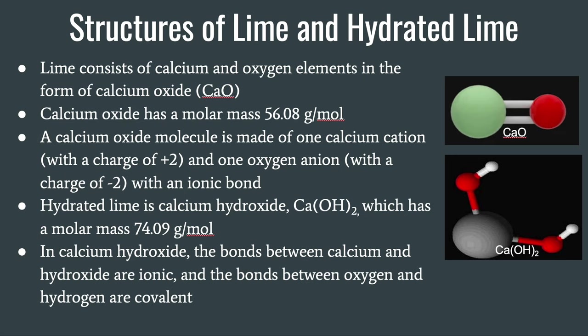So what is the structure of lime and hydrated lime? Lime consists of calcium and oxygen elements in the form of calcium oxide. Calcium oxide has a molar mass of 56.08 grams per mole. A calcium oxide molecule is made out of 1 calcium ion with a charge of positive 2, and 1 oxygen anion with a charge of negative 2, joined by an ionic bond. Hydrated lime is calcium hydroxide, which has a molar mass of 74.09 grams per mole.